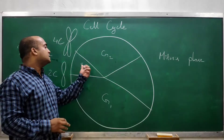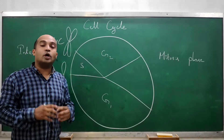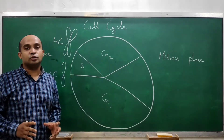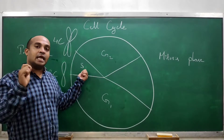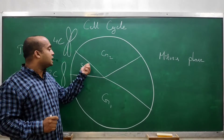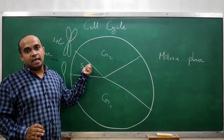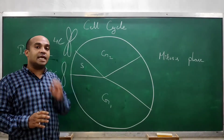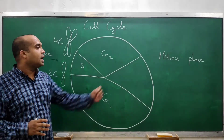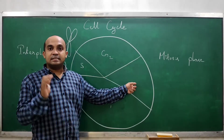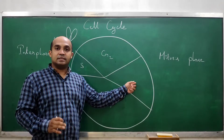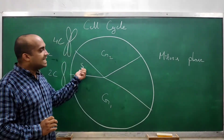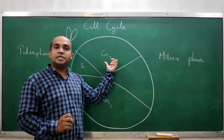If it is an animal cell, then centrioles in the cytoplasm will also duplicate during S phase, and there will be two centrosomes by the completion of S phase in an animal cell. These centrosomes are very essential for the mitosis phase, that is the cell division phase.